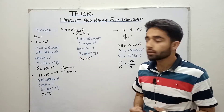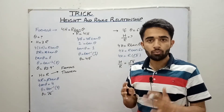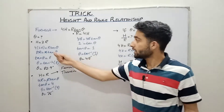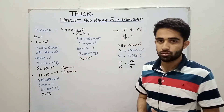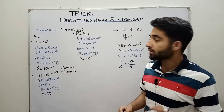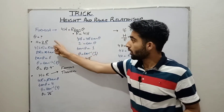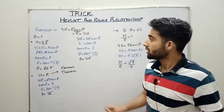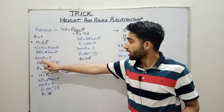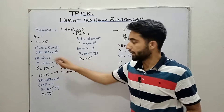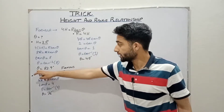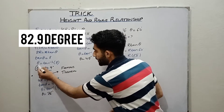For the exam, a very important question is finding the angle if we know the height and range. The first case: if height equals 2 times range, we put 2R in the height position. It becomes 8R = R·tan(θ), the R cancels, so tan(θ) = 8. Therefore θ = tan⁻¹(8), which equals approximately 89.9 degrees.